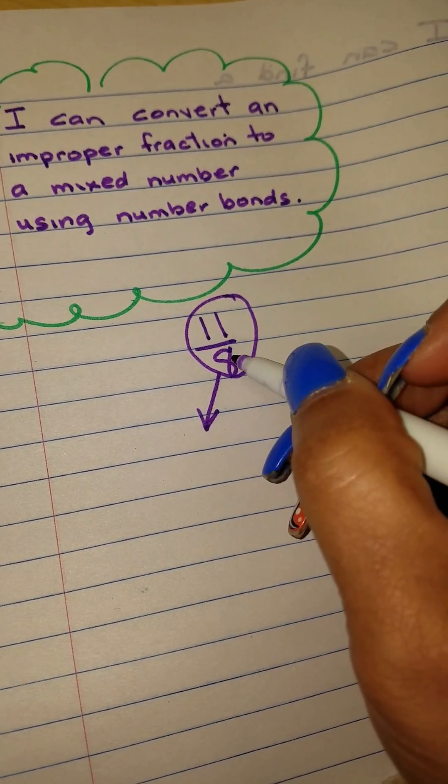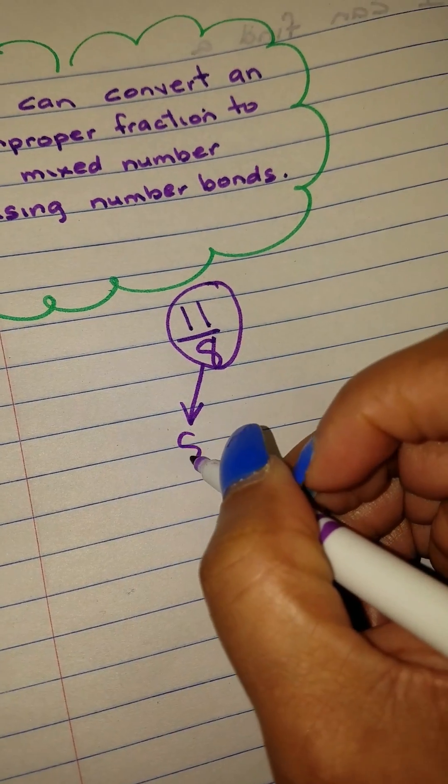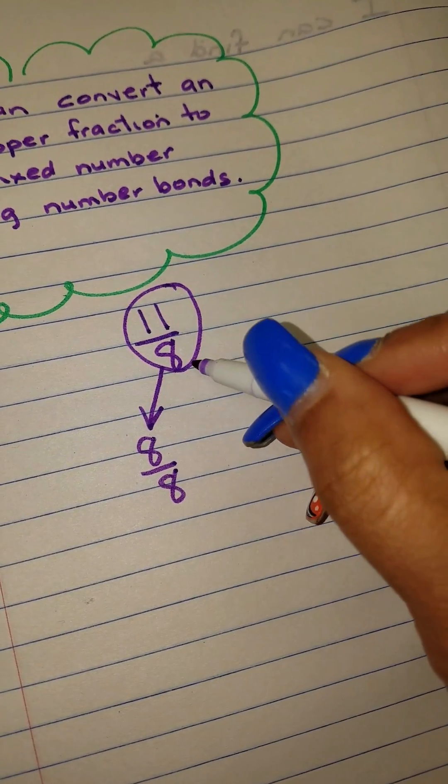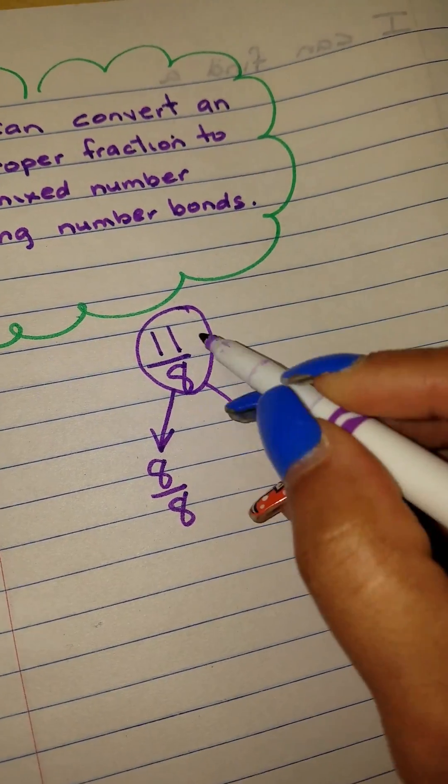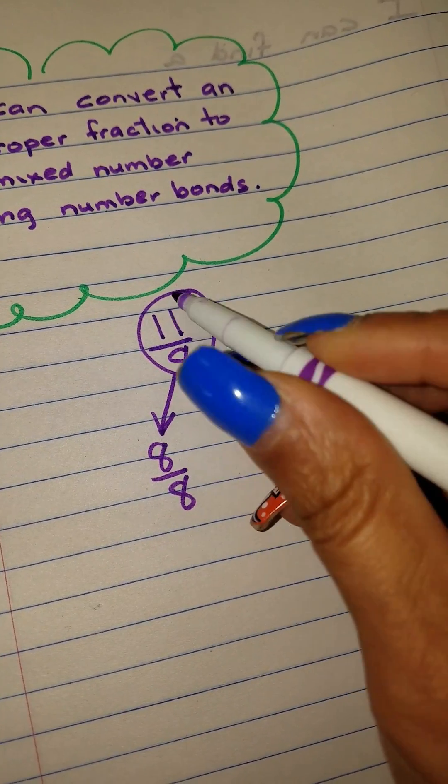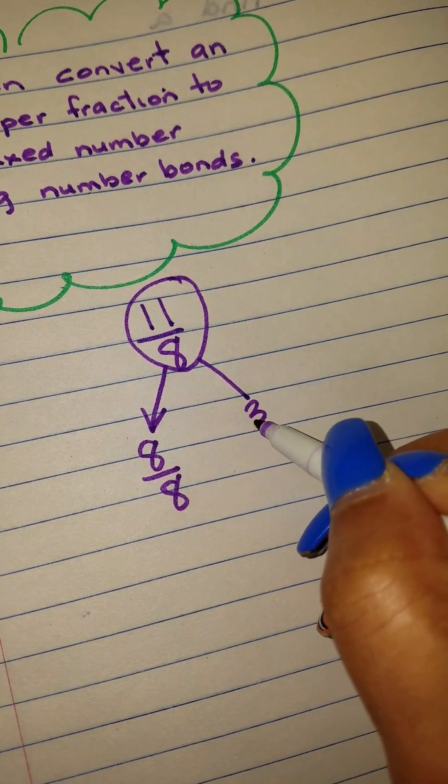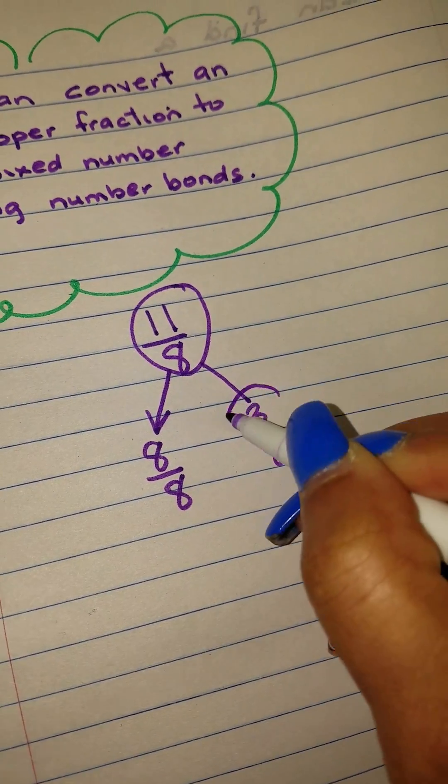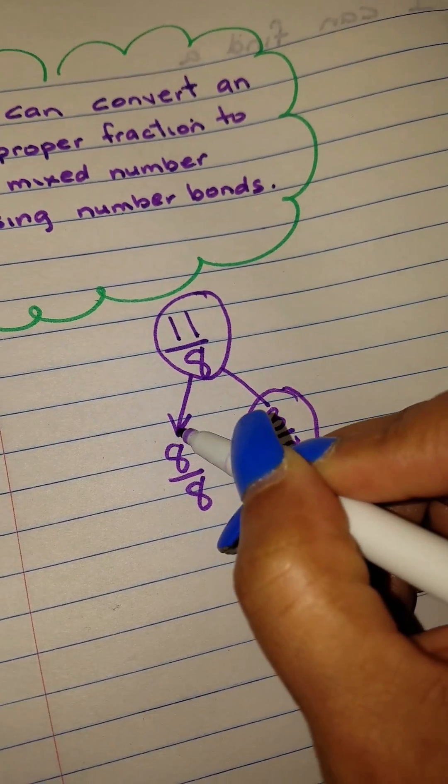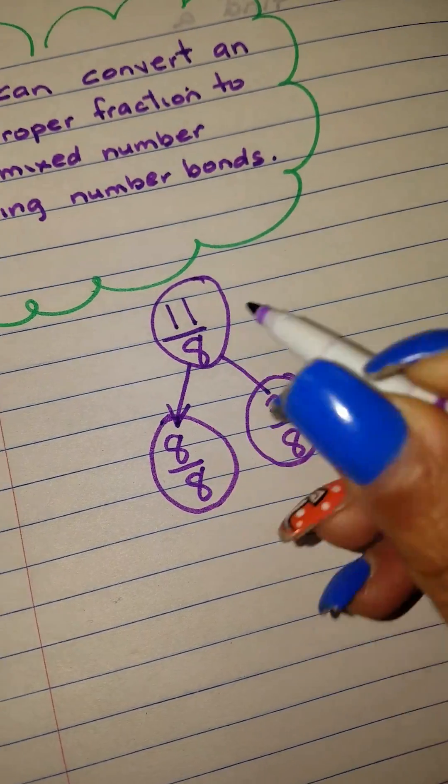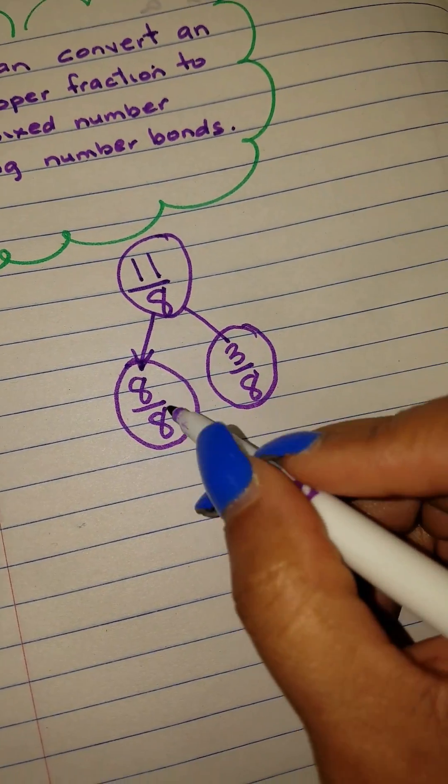How do we get a group of eighths? One whole represents 8 over 8. And what's left, if we have taken 8 out of 11, we have 3 eighths. Thus our two number bonds would be 8 eighths and 3 eighths.